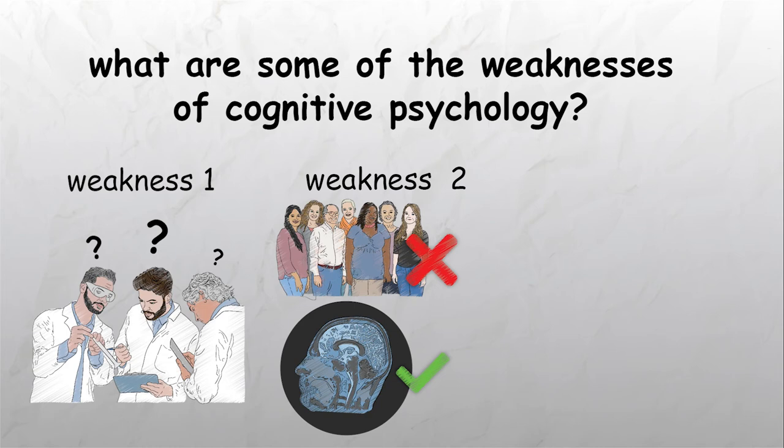Reductionism is the idea that complex phenomena can be explained by simpler things. The cognitive approach often takes this narrow focus and ignores social and emotional factors which may impact on cognition. However, the reductionist approach does have strengths. An advantage of the reductionist view is that by breaking down a phenomenon to its constituent parts, it may be possible to understand the whole. This type of single-mindedness has led to some great discoveries in psychology, as it has in the natural sciences.